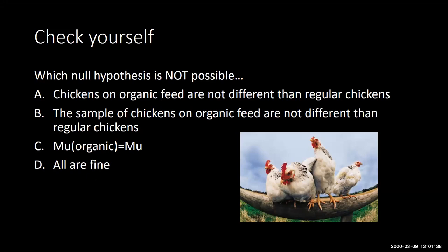Let's take a step back and see which null hypothesis option is not possible. Are we allowed to say chickens on organic feed are not different than regular chickens? Or that a sample of chickens on organic feed are not different than regular chickens, written as mu organic equals mu? Option B is not possible because it uses the word 'sample.' We're not interested in the sample itself — we use inferential statistics to speak about the larger population. So we don't use the word 'sample' when writing null and alternative hypotheses.